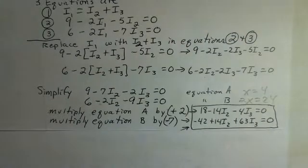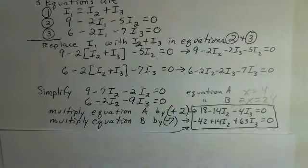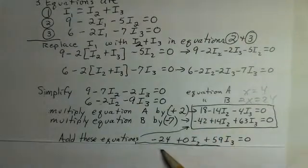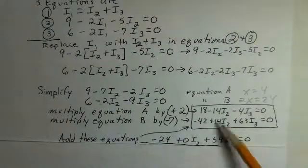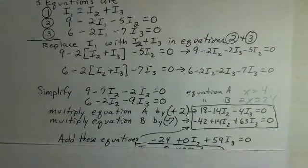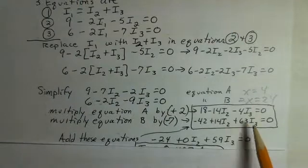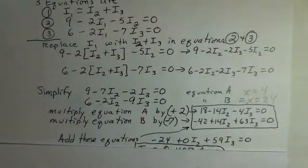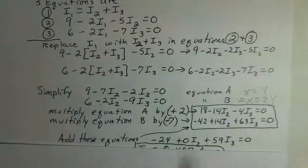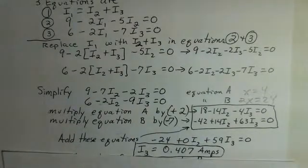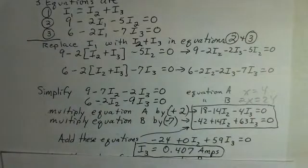And when we do that the plus 18, the minus 42, the minus dominates, we get minus 24. The minus 14 and the plus 14 have created zero coefficient and the plus 63 and the minus 4, 59 I3. The I2 term is now gone as a zero coefficient and we can solve for I3. If you do that, try that on your calculator. I think you'll get close to 0.407. I've rounded a little bit but now we know the number for I3.